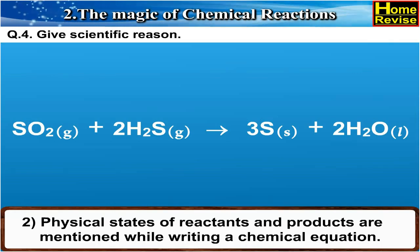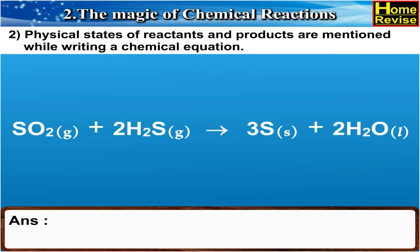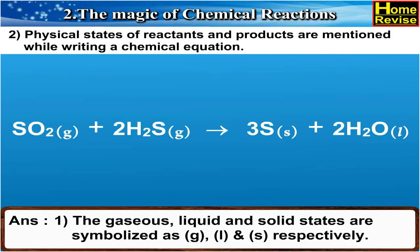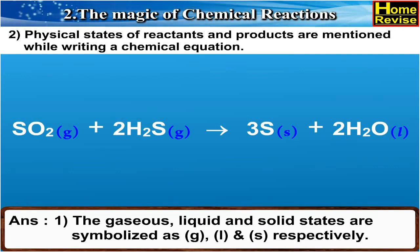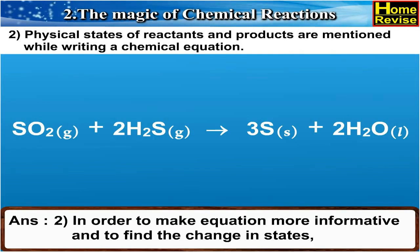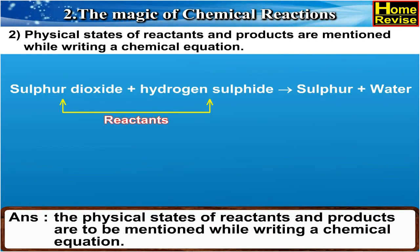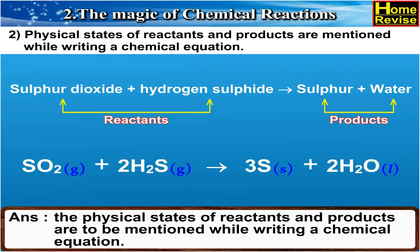2. Physical states of reactants and products are mentioned while writing a chemical equation. Answer: The gaseous, liquid, and solid states are symbolized as G, L, and S respectively. In order to make the equation more informative and to find the change in states, the physical states of reactants and products are to be mentioned while writing a chemical equation.